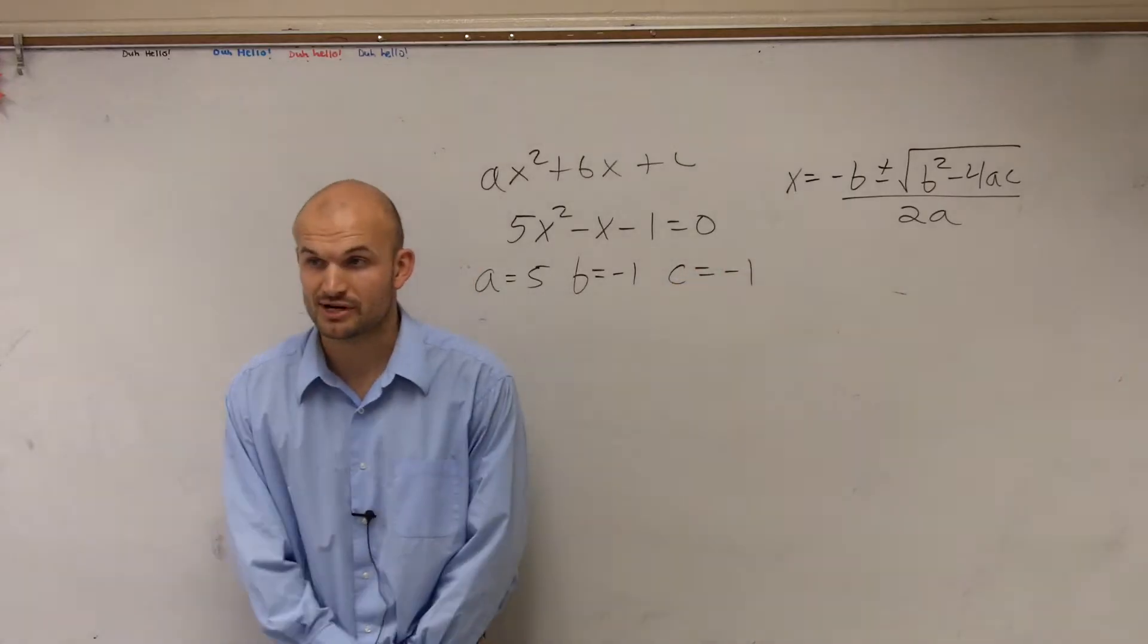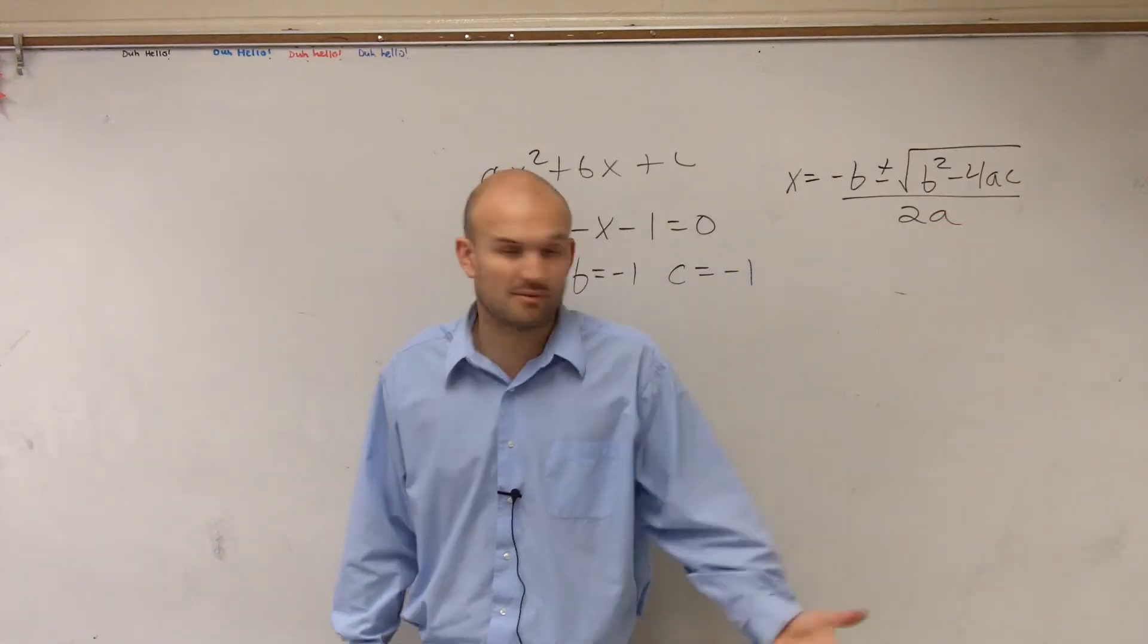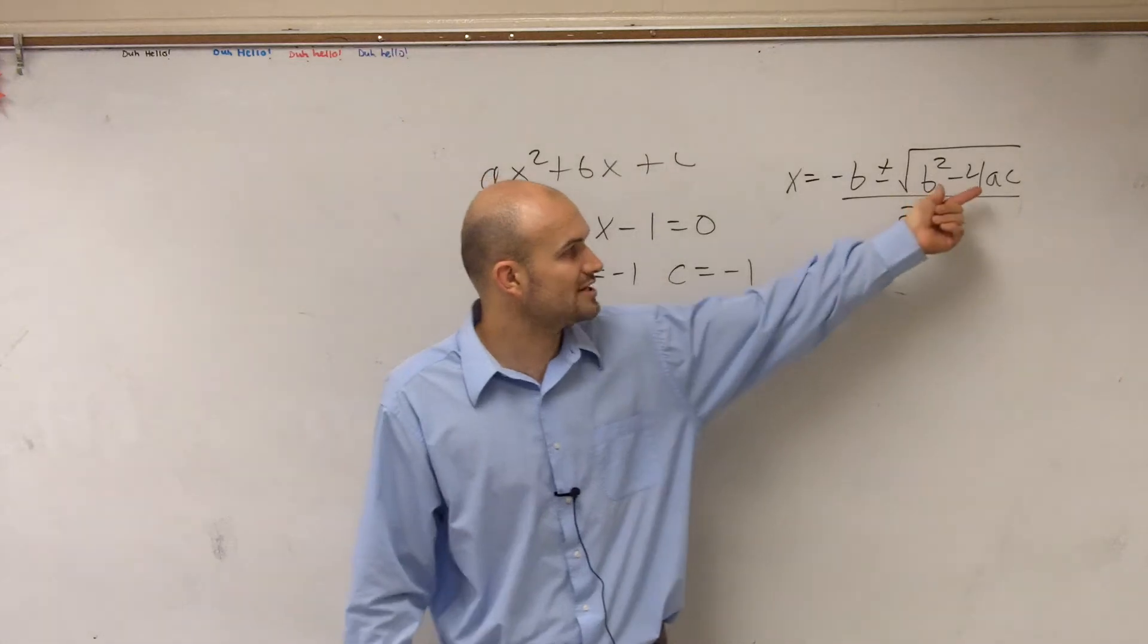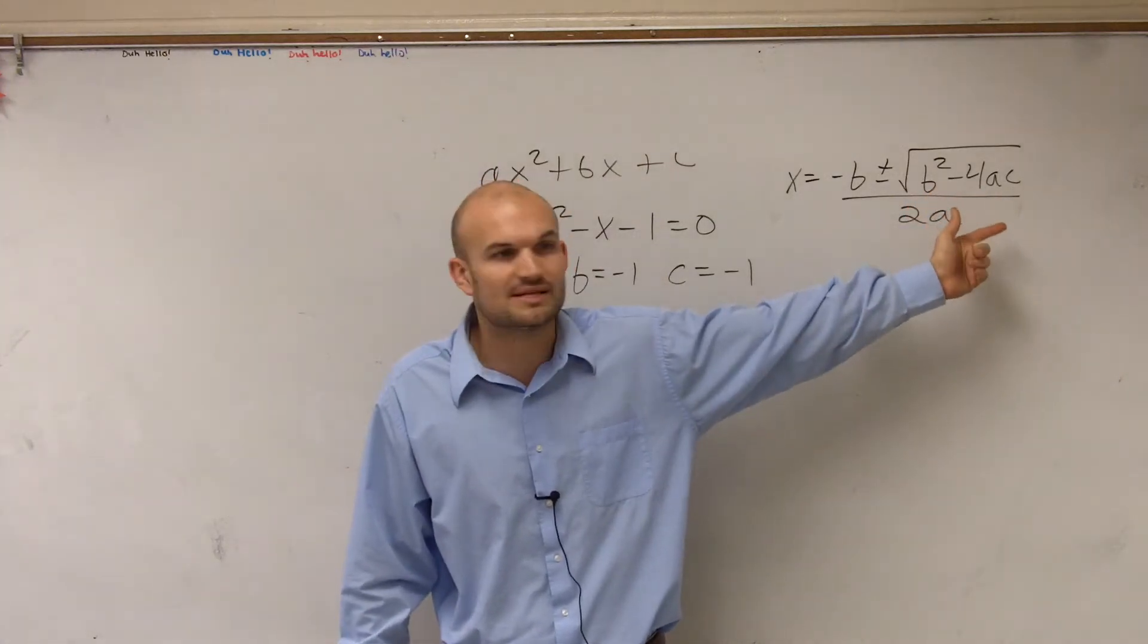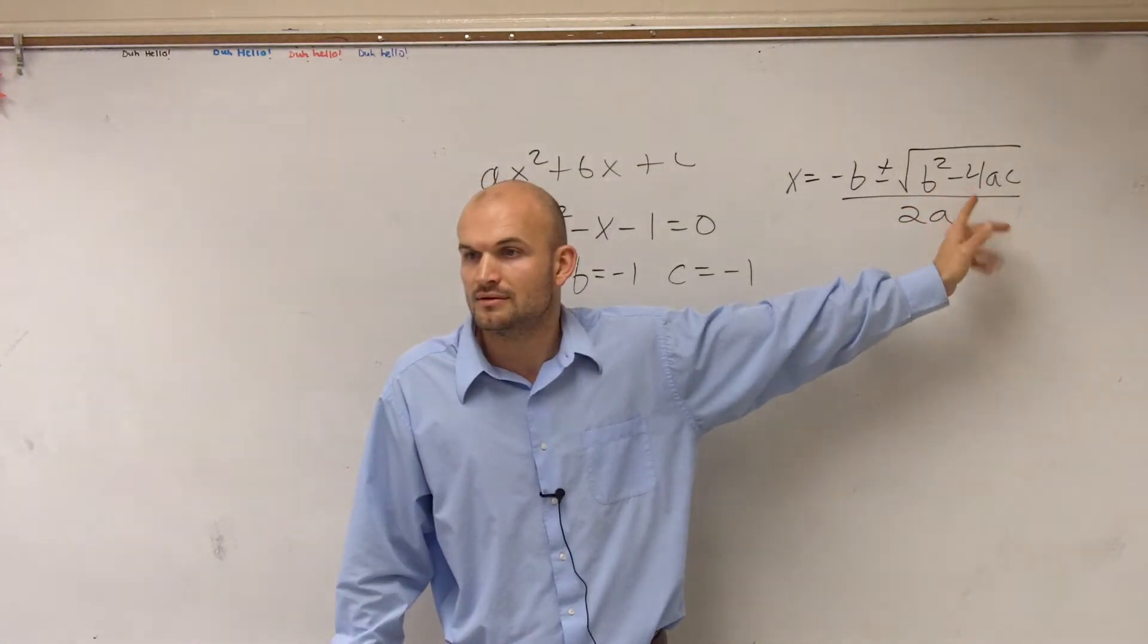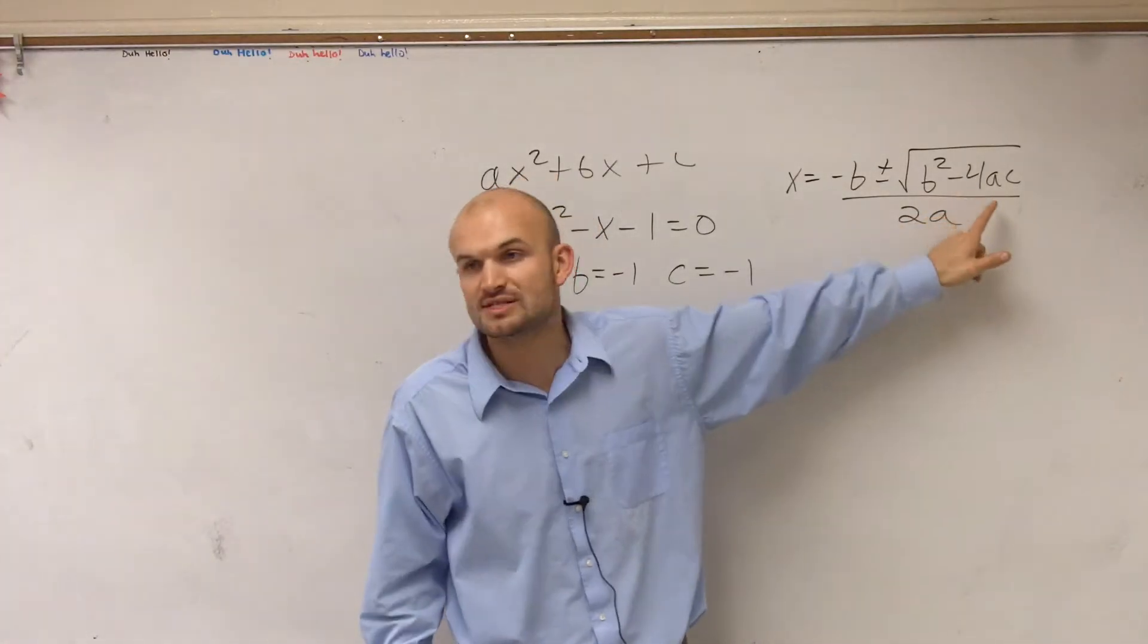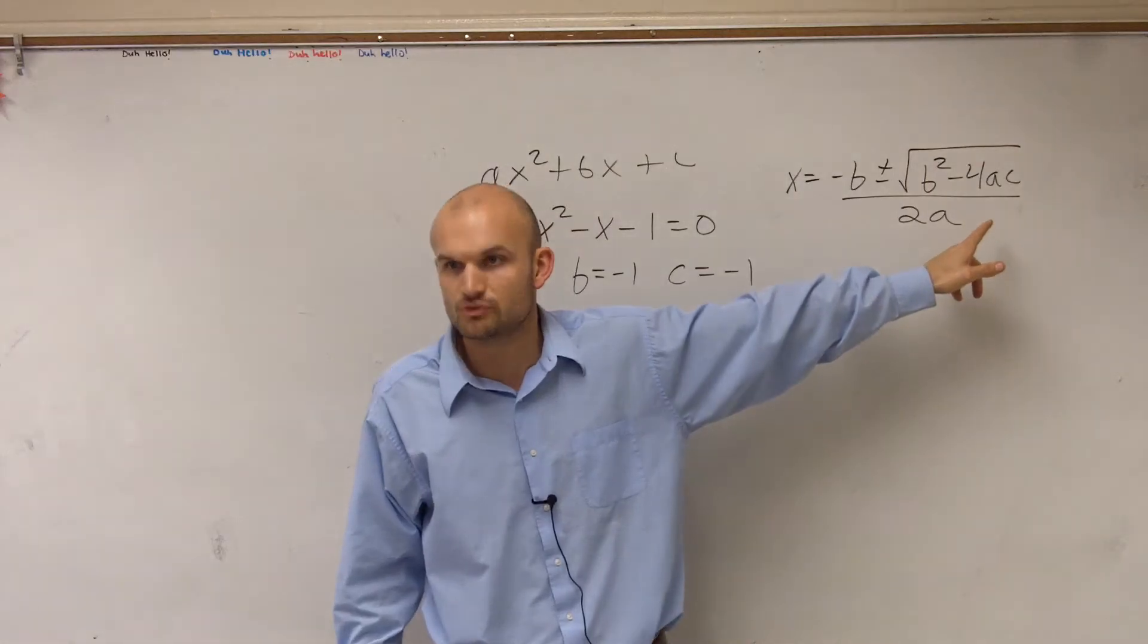Now, the other cool thing about the quadratic formula is look at what's under the square root. You guys remember that square root? Do you guys remember what the b squared minus 4 times a times c, what does that represent? The discriminant. So guess what? If you can just find the discriminant, then you already know it's going to go under your square root.